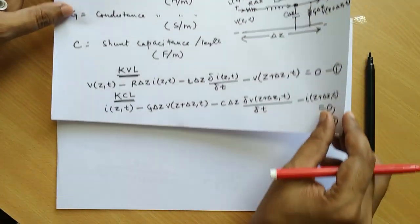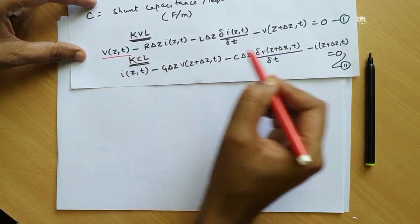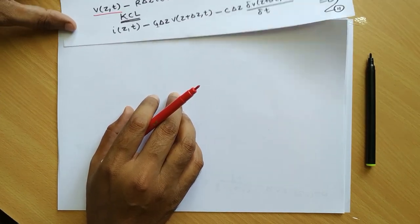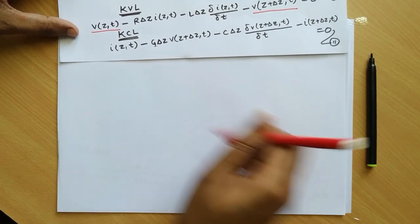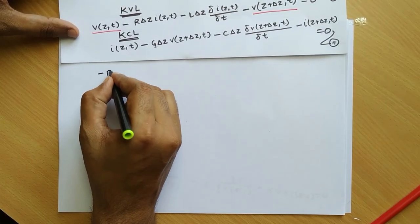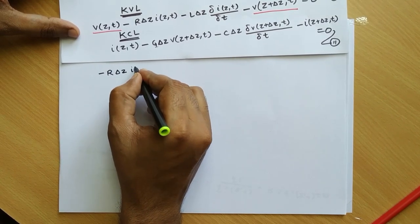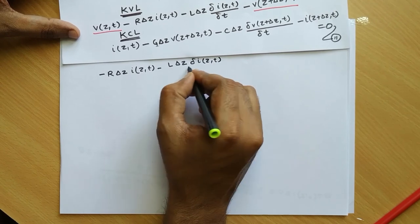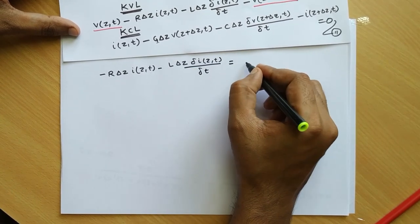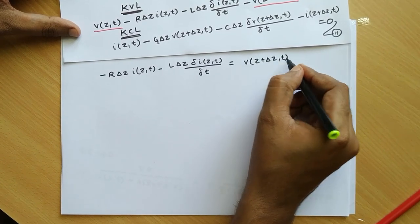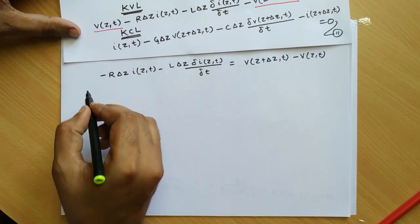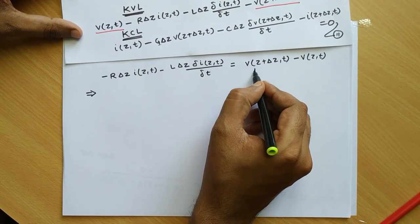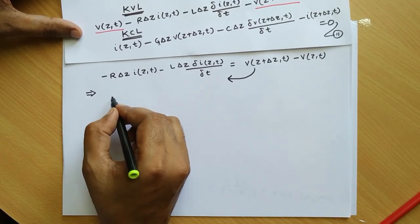Let us rearrange these equations by taking certain components to the right side and dividing by delta Z on both sides. We will have: [V(Z + delta Z, T) minus V(Z,T)] divided by delta Z equal to minus R·I(Z,T) minus L·del I(Z,T)/del T.